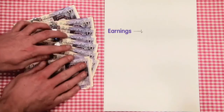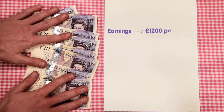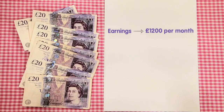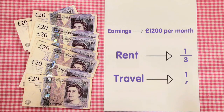Molly earns £1,200 per month. From this, she spends a third on rent and a quarter on travel. What fraction of her earnings remain?